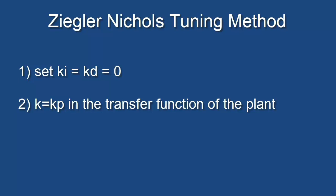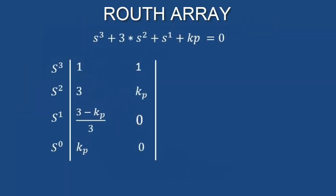To begin with the method, set ki and kd equal to zero, and gain of the system K considered to be equal to Kp. Determine the range of Kp according to Routh-Hurwitz, as we already learned in the previous class.